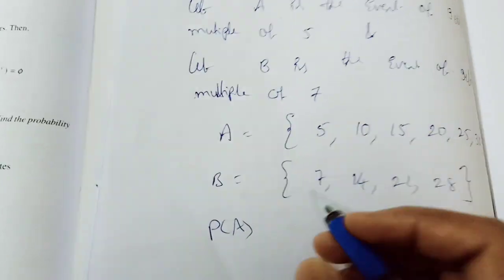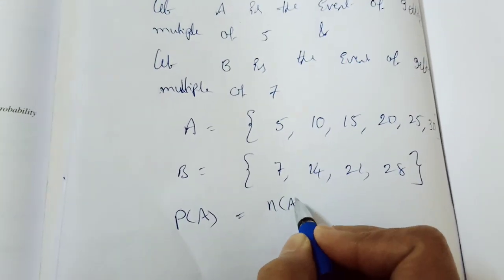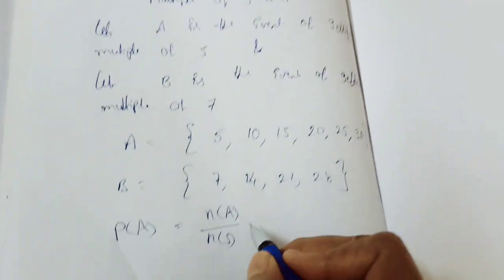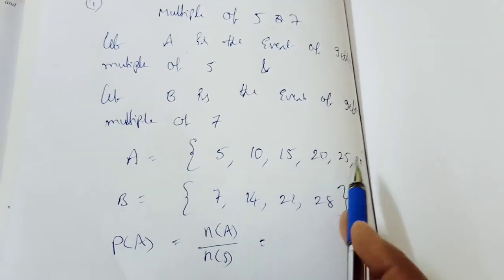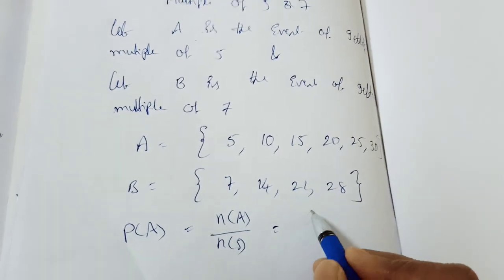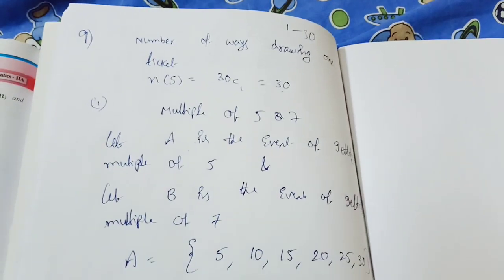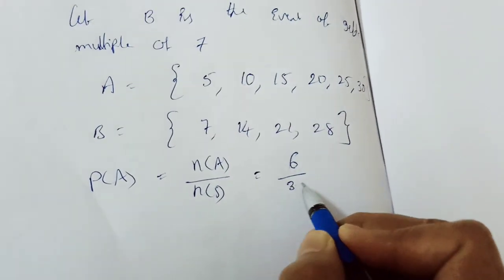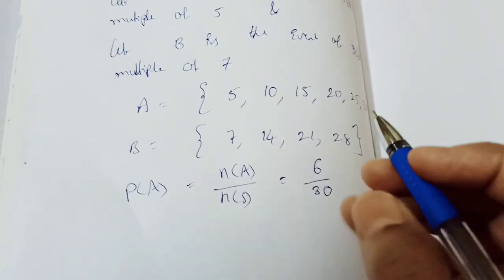The formula is P(A) = N(A) by N(S). N(A) — the number of multiples of 5 from 1 to 30 — has elements: 5, 10, 15, 20, 25, 30. That is 6 elements. N(S) is 30. So P(A) = 6 by 30.